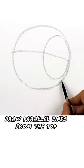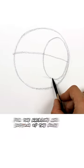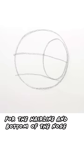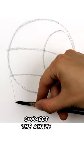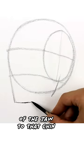Draw parallel lines from the top and bottom of the oval for the hairline and bottom of the nose. One more equal section below and that's the chin. And now connect the shape of the jaw to that chin.